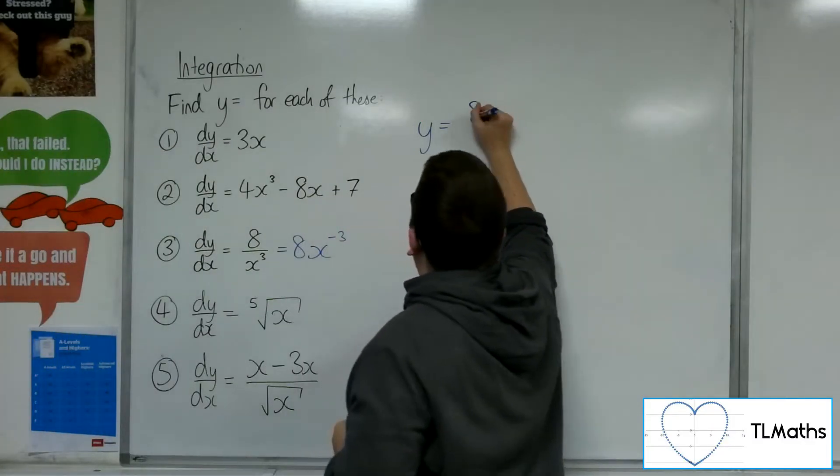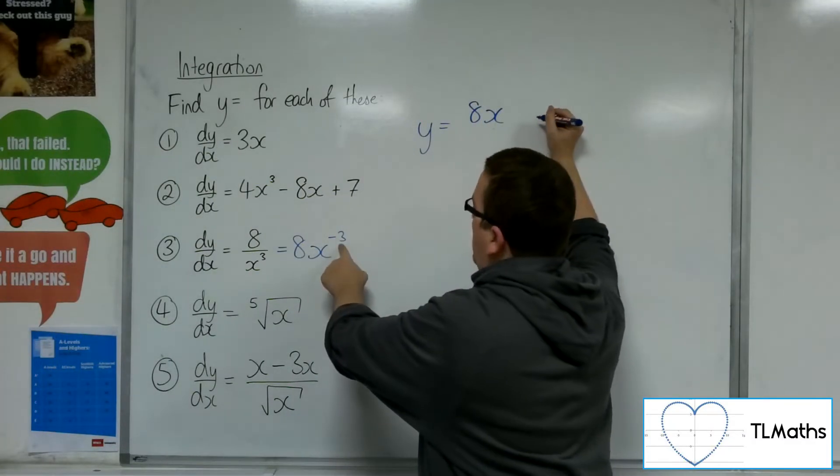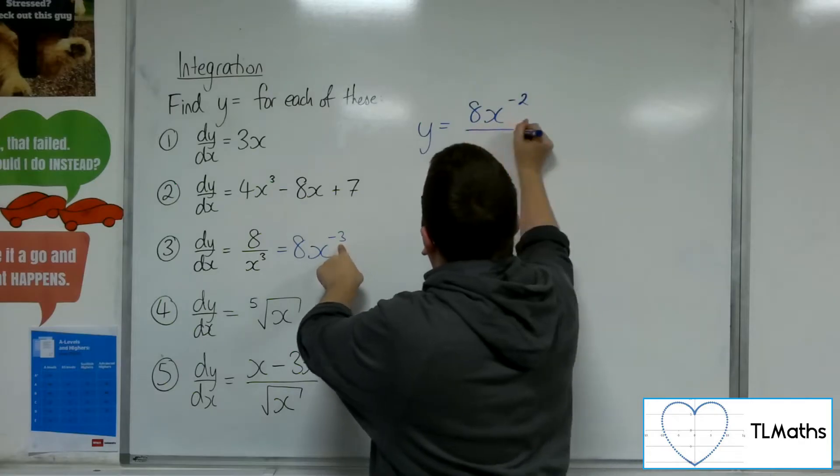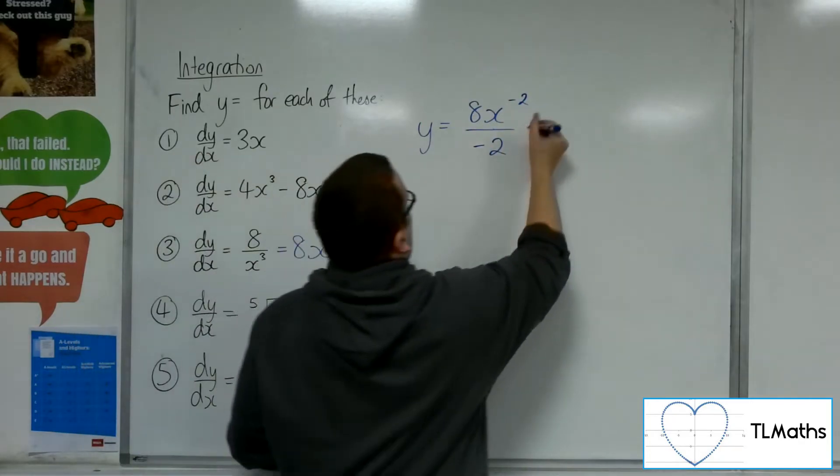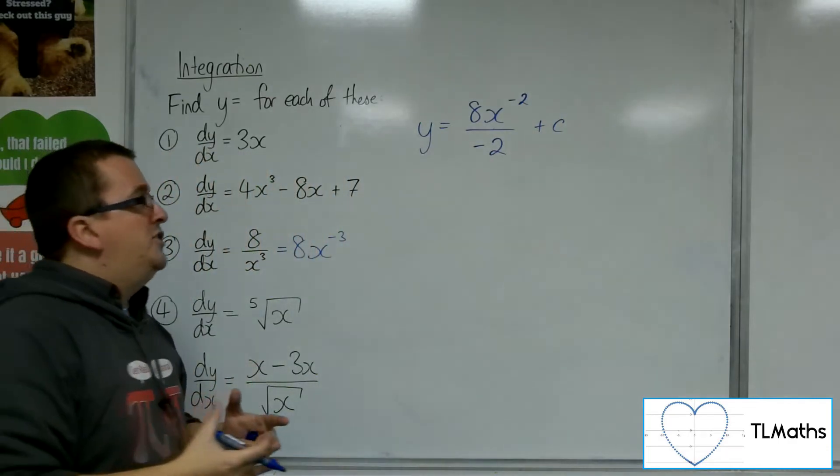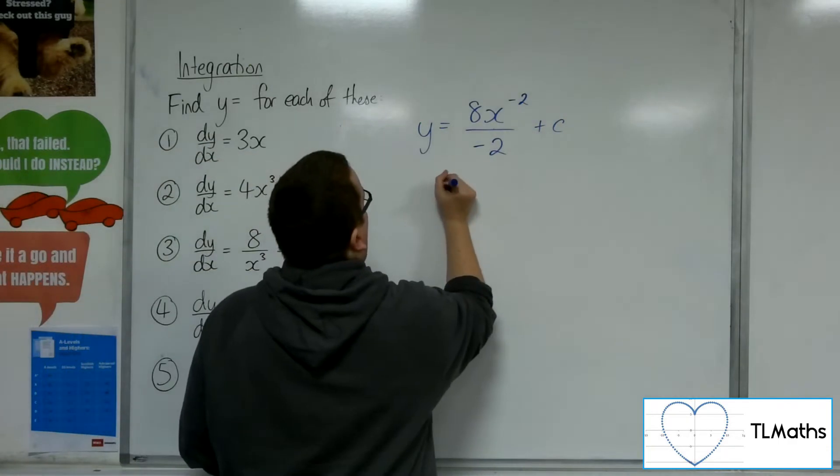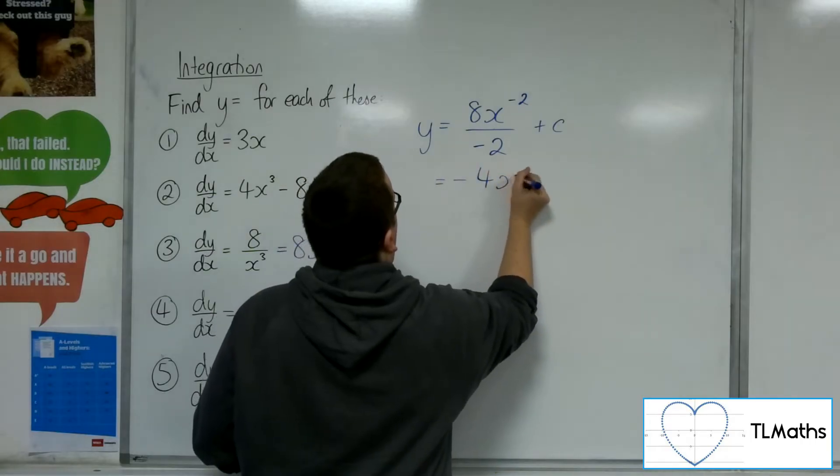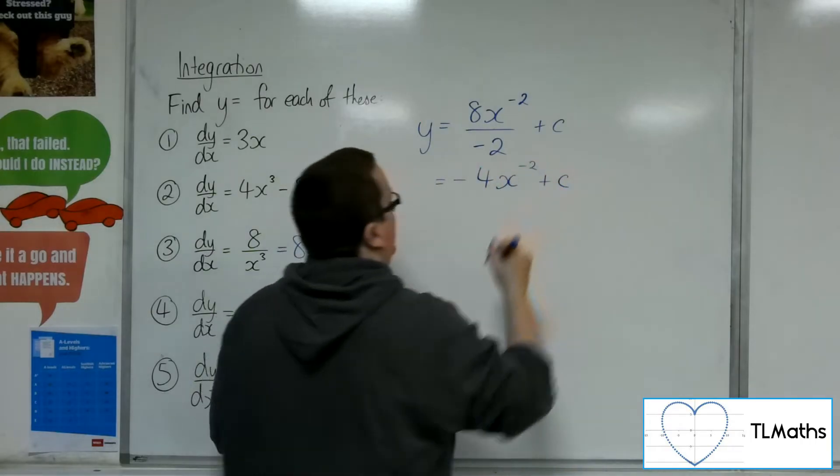So, I'm going to add 1 to the power, minus 3 plus 1 is minus 2, so I'm dividing by minus 2 as well, plus c, that constant of integration. Now, 8 over minus 2 can be simplified, so that's minus 4x to the minus 2 plus c.